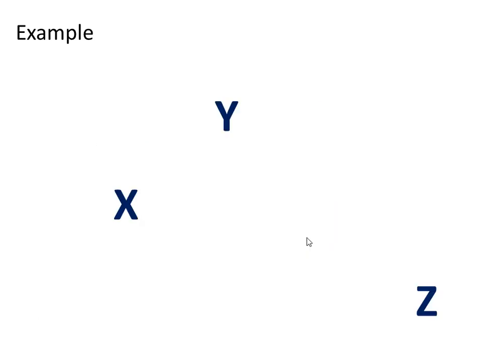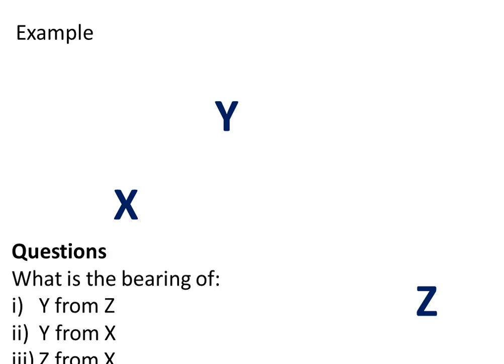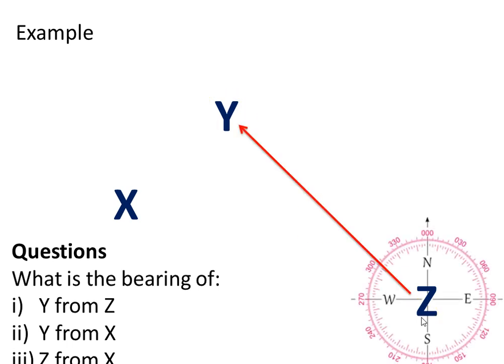Let's make it slightly more difficult. Let's talk about these points: X, Y and Z. Here are the questions. The first question asks us, Y from Z? So we're leaving Z and travelling to Y. We place the bearing again and line it up - it's going to be 310 degrees.